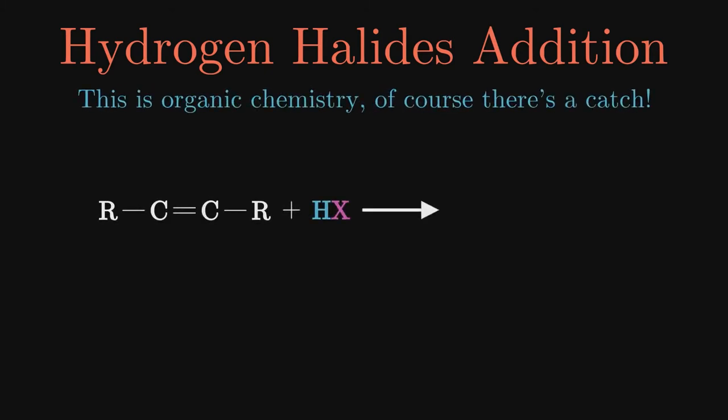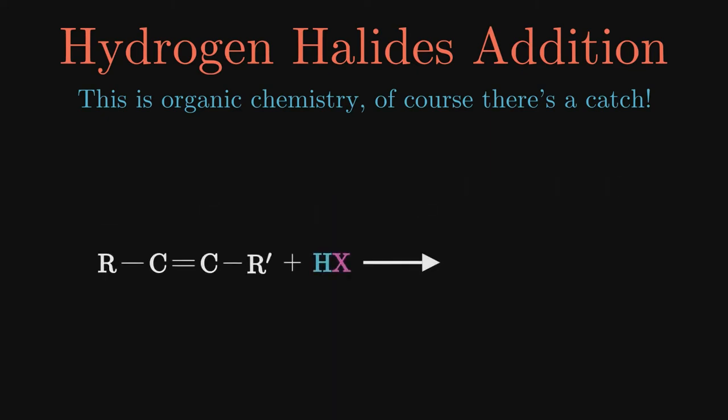If the sp2 carbons are bonded to identical sets of substituents, yes, it is that easy. However, if they are bonded to different substituents, we may end up with two different products, so we will need to recognize when we are faced with such a possibility and what that means for the process overall.